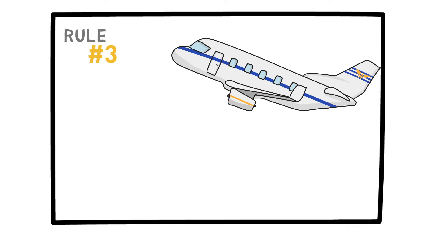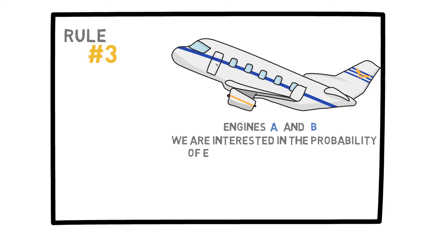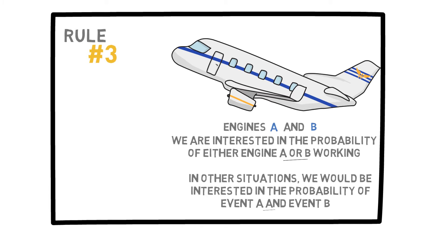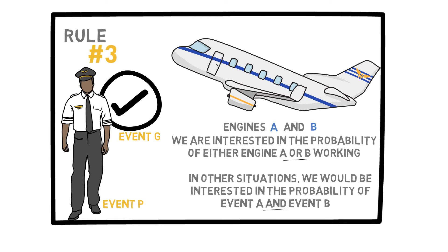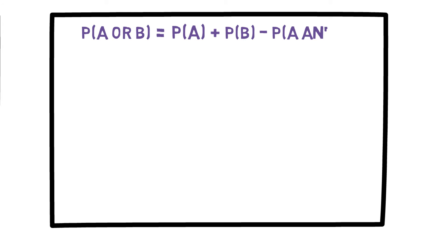Rule 3 deals with many practical situations wherein we have to combine events. For example, I have an airplane that has two engines, A and B. The plane can still fly if only one of the engines is working. In this situation, we are interested in the probability of engine A or engine B working. In other situations, we are interested in the probability of event A and event B — for example, where event G is the event that the plane is in good condition and event P is the event that the pilot arrives on time. A general formula that is useful here is: the probability of A or B is always equal to the probability of A plus the probability of B minus the probability of A and B.